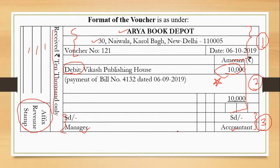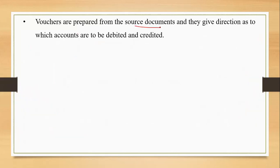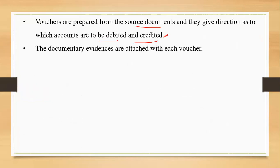The revenue stamp is pink in color and its value is one rupee. Documentary evidences are attached with each voucher so they are available for verification at any point of time. The debit and credit decision is taken based on the rules of accounts, and all these things will be learned gradually as we proceed through chapter five and into chapter six.